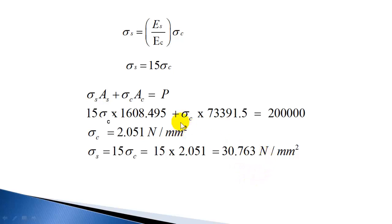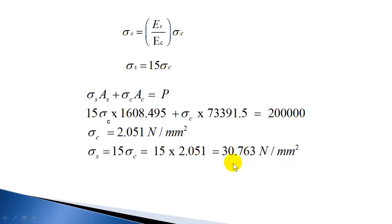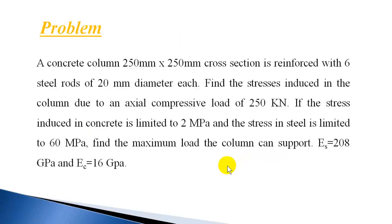Even though steel has higher stress, concrete occupies a much larger area, so concrete shares more of the total load than steel. You can find the load taken by concrete as σc × Ac, and load taken by steel as σs × As. If you find one, the other is simply total load P minus the load taken by the first. Now let us work out another example: a concrete column 250 mm by 250 mm...